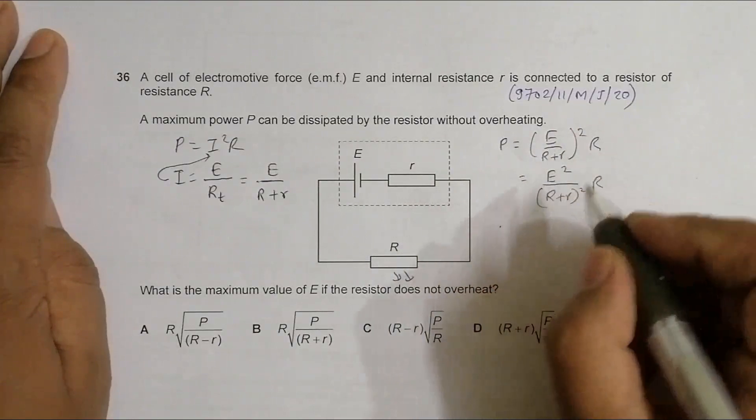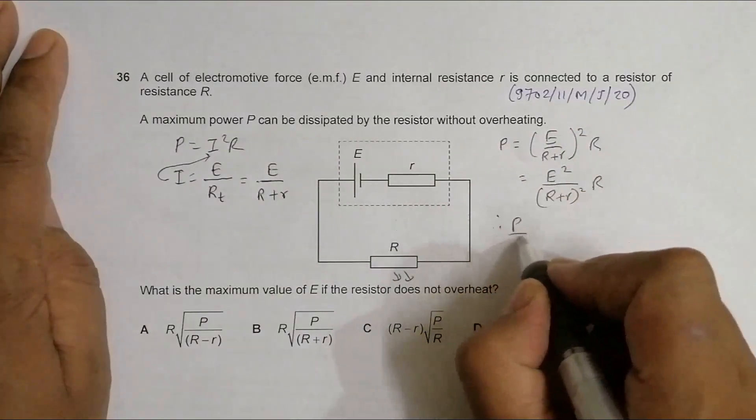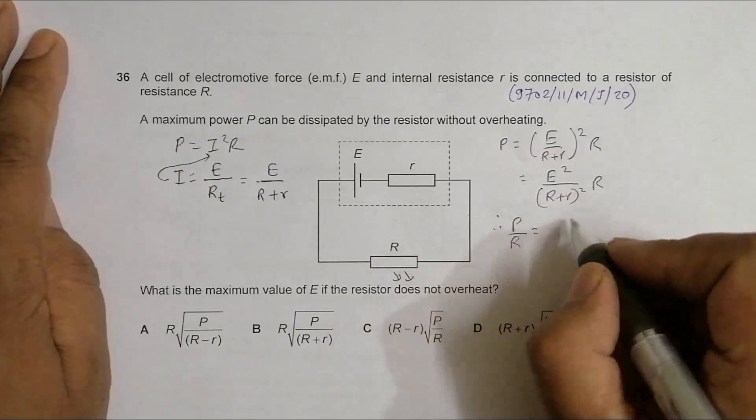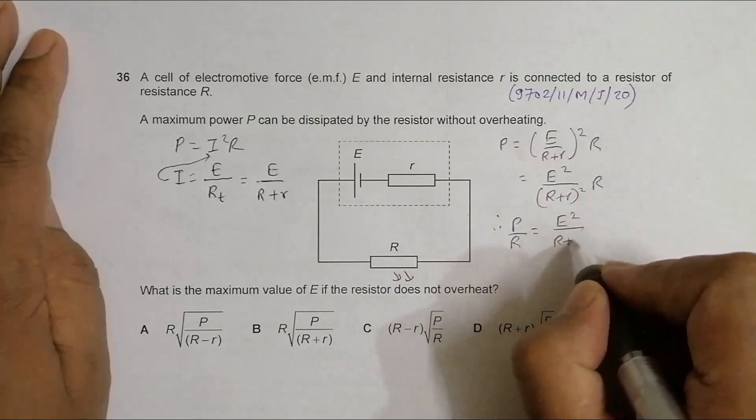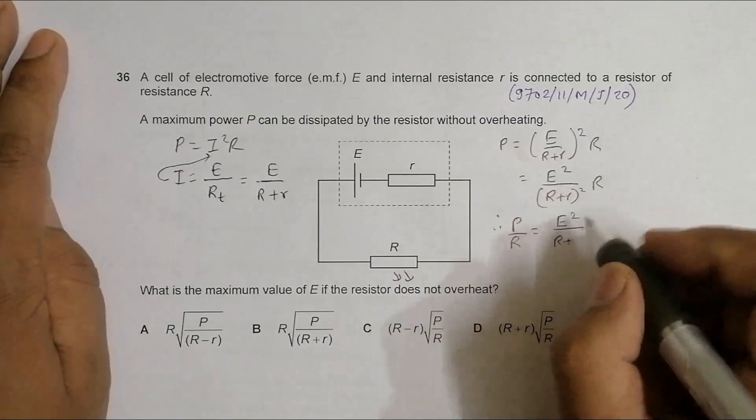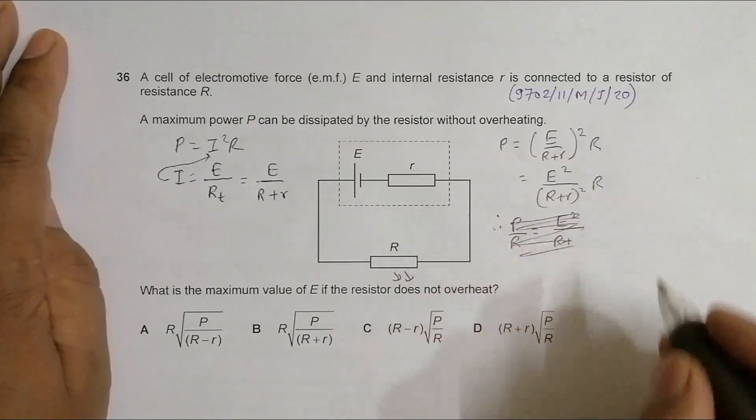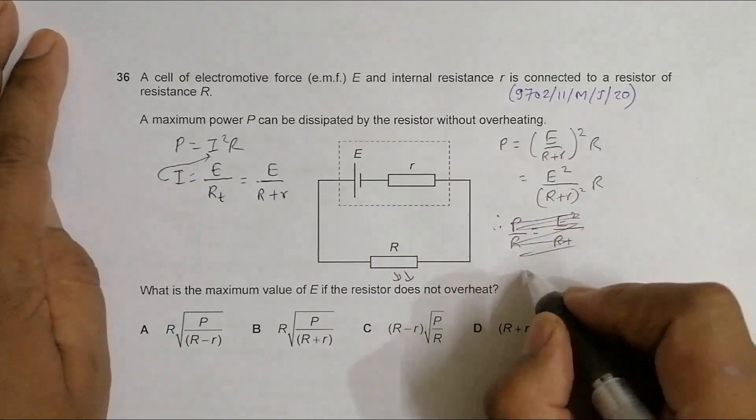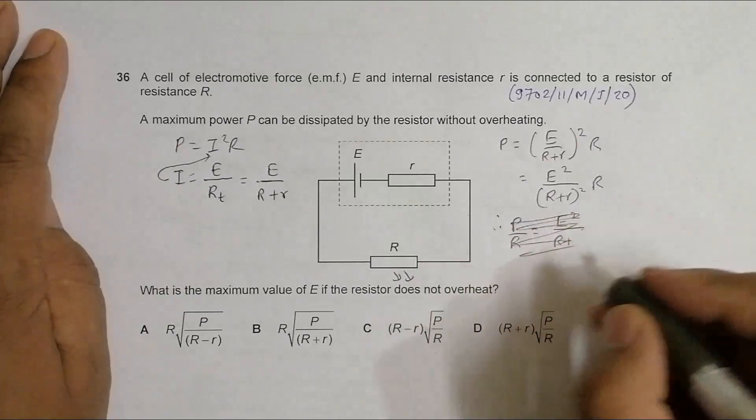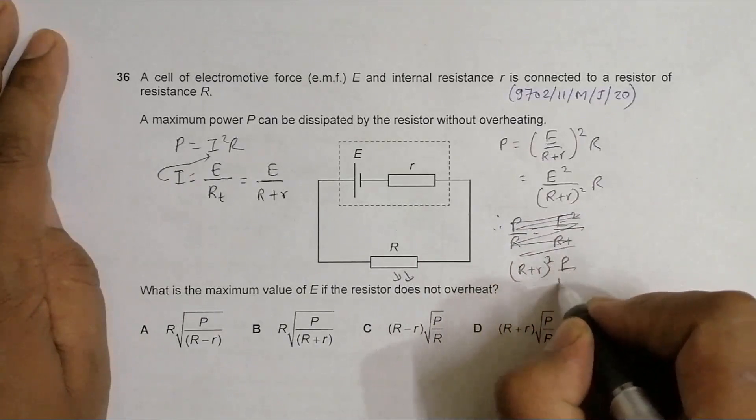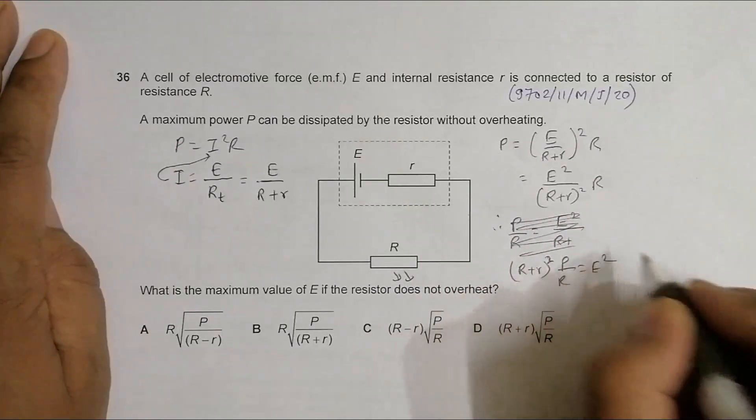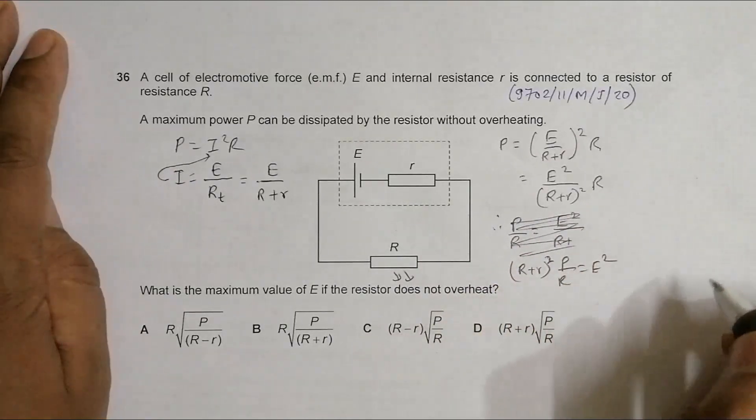Therefore P by R is equal to E squared by R plus r whole squared. I can do it at once, so R plus r whole squared into P by R is equal to E squared.